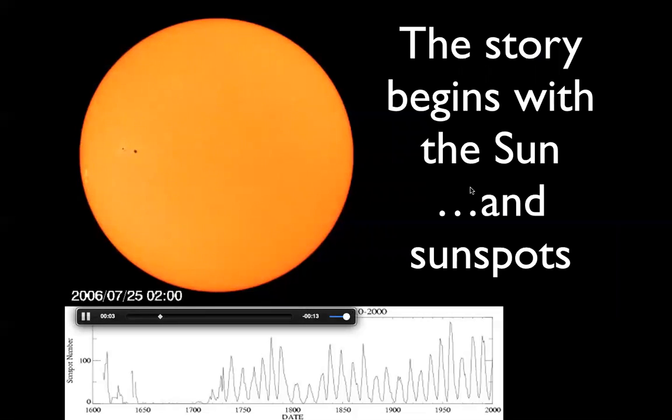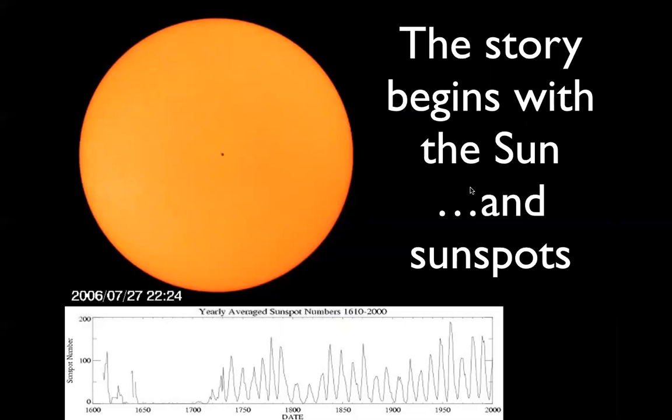So the story with CMEs begins with the sun and sunspots, and sunspots are evidence of solar magnetism. Here we're seeing white light images of the sun, a movie from 2006, and there wasn't a lot going on, but you do see there a couple of sunspots. The actual number of sunspots goes up and down over time, and this has been known for quite a while that there's something called the solar cycle with roughly an 11 year period, and here you see the sunspot number in the last few hundred years.